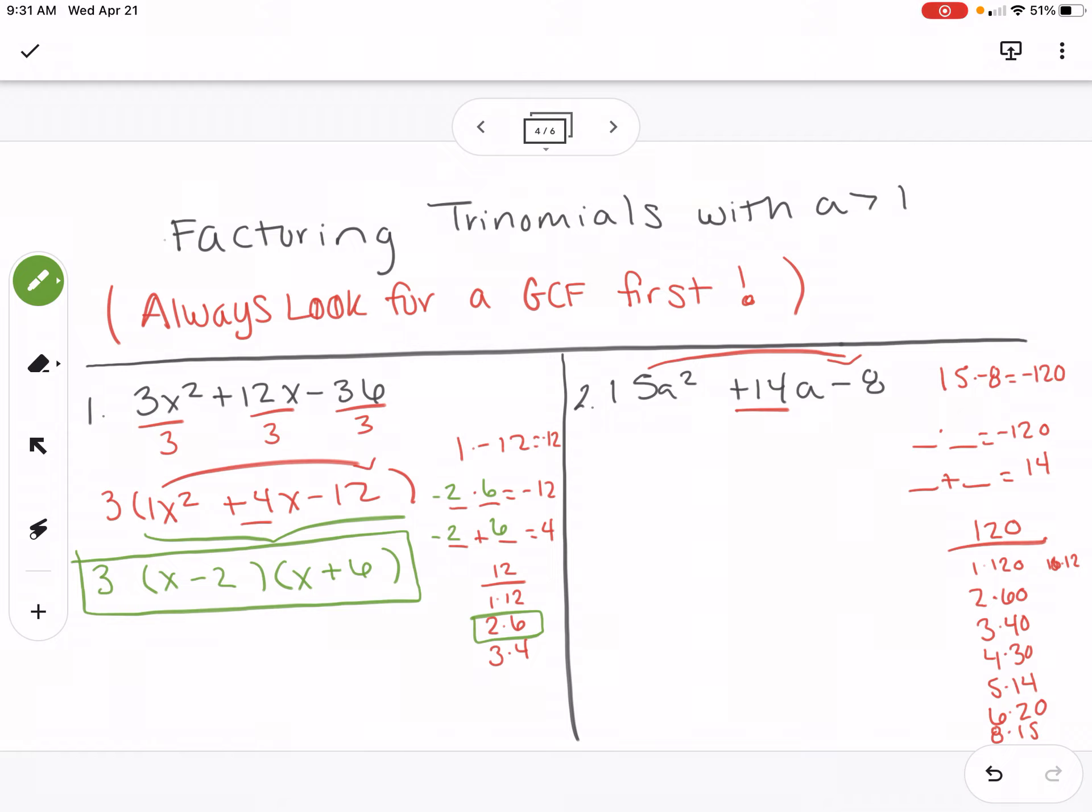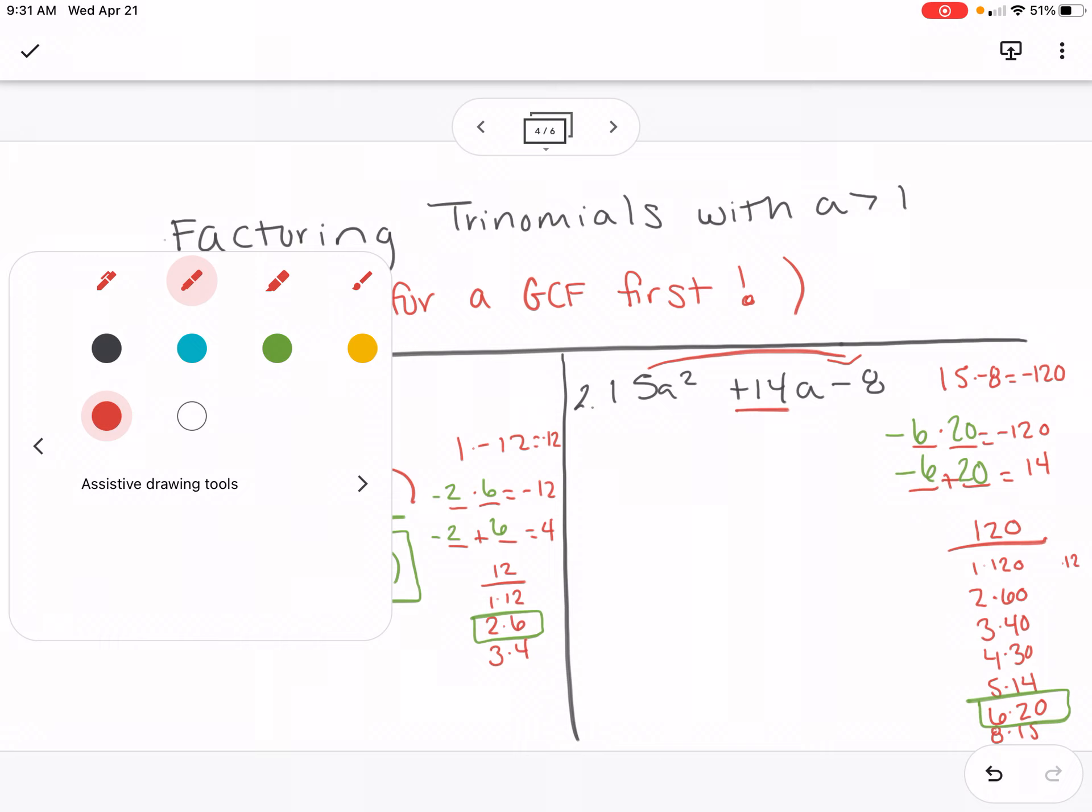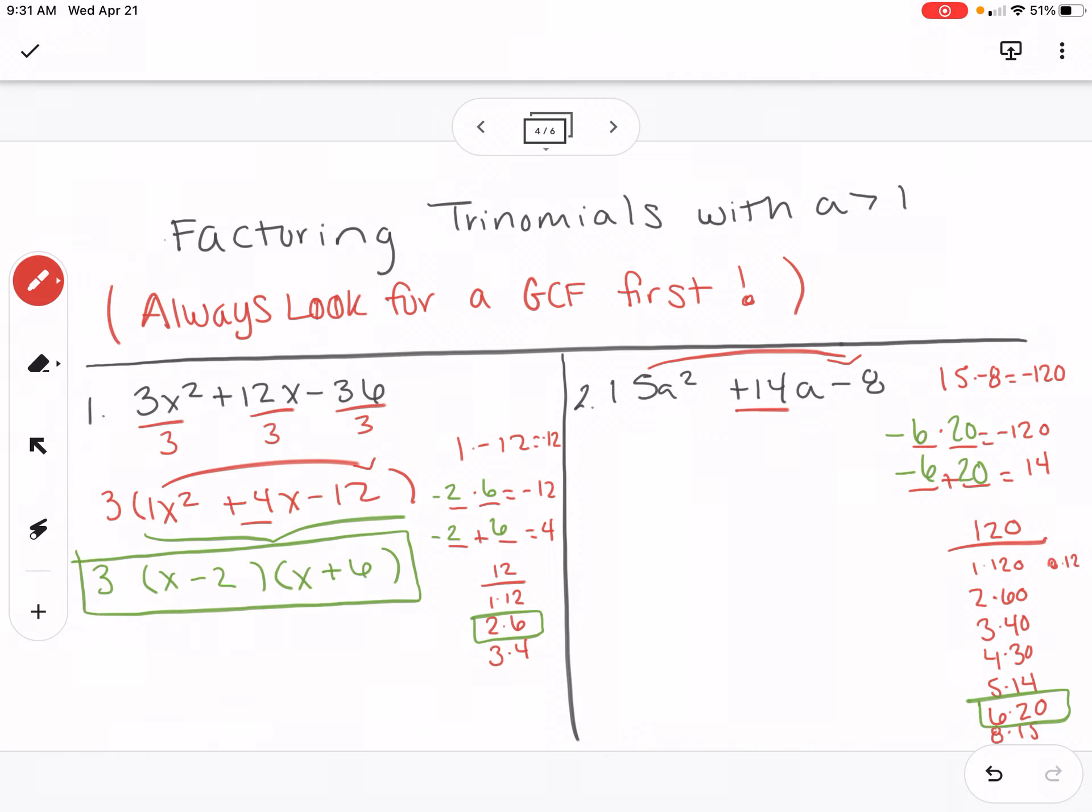So now we're going to see which of these adds up to 14 or subtracts to get 14. That would be 6 and 20. And then since I want positive 14, the 6 is going to be negative. Now here, when we're writing our answer, it's going to be a little different.